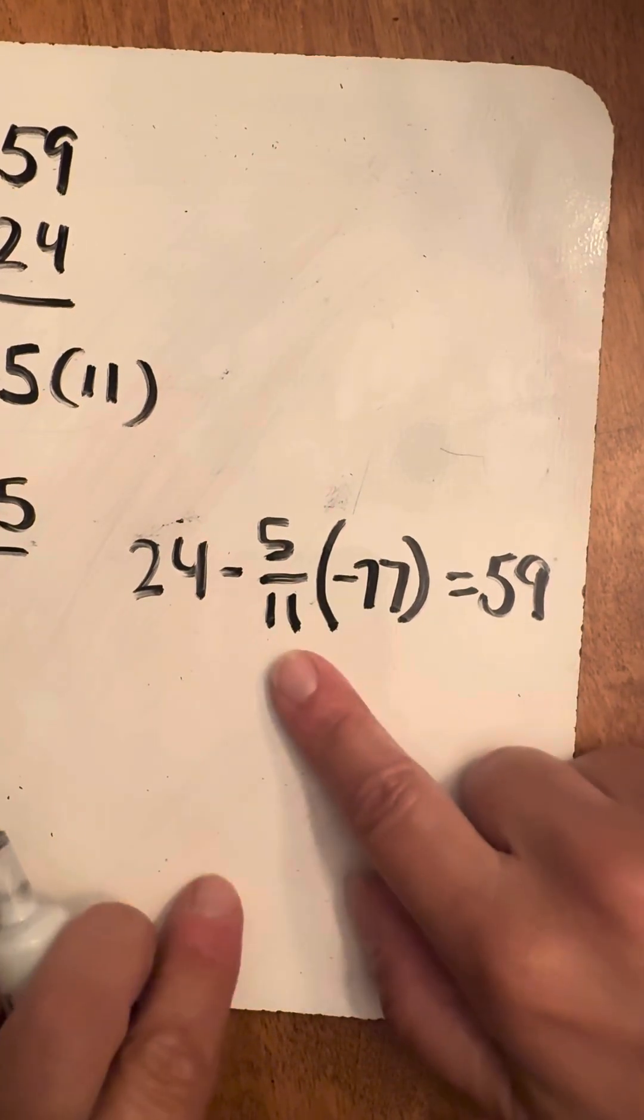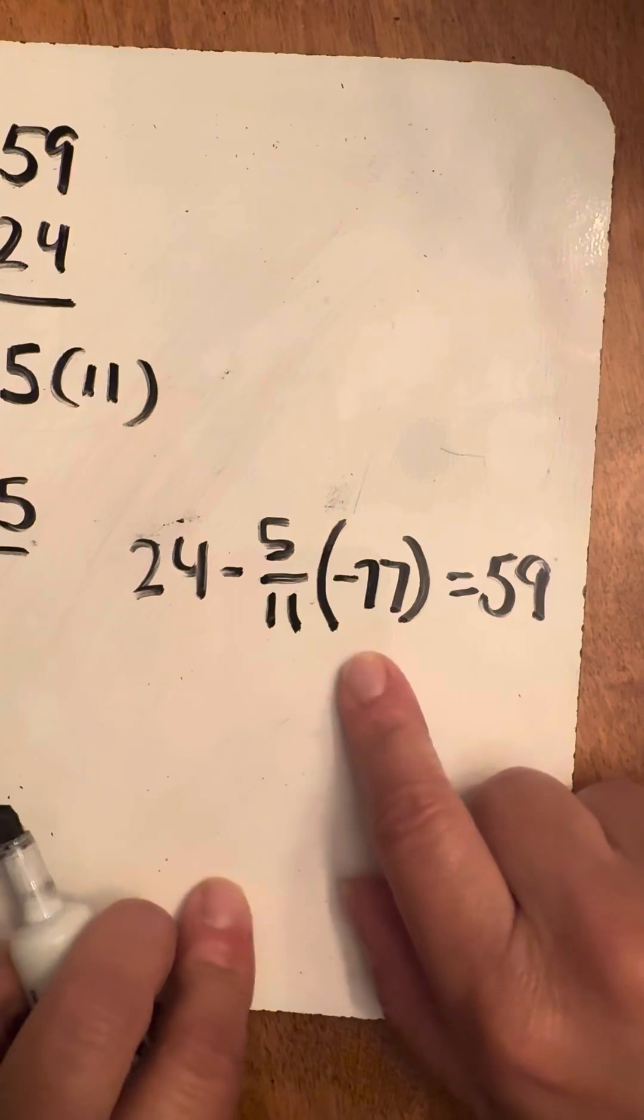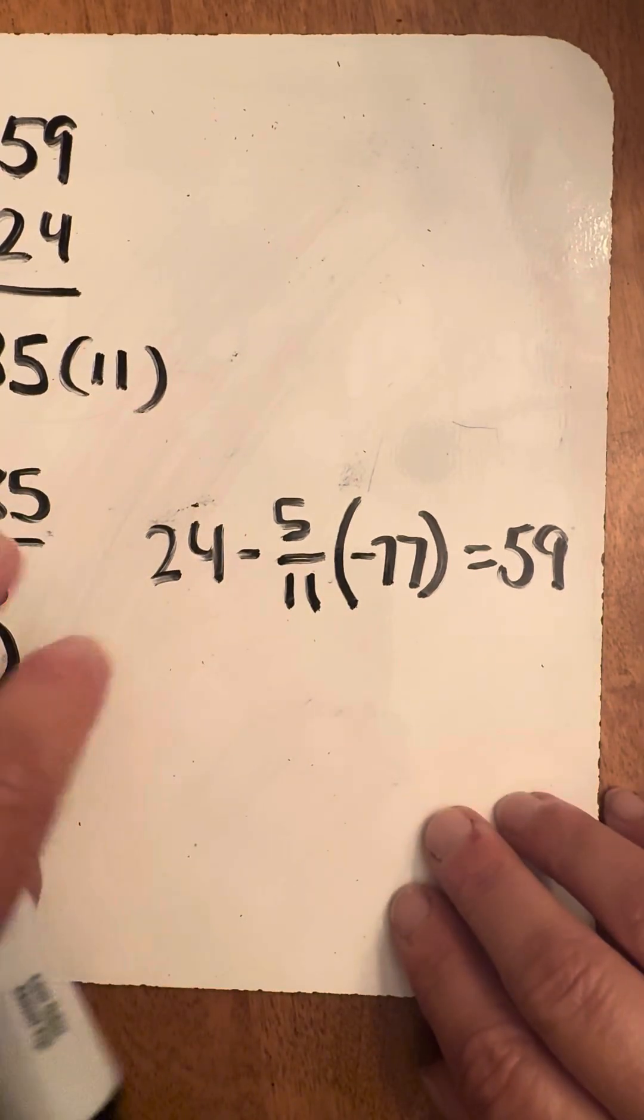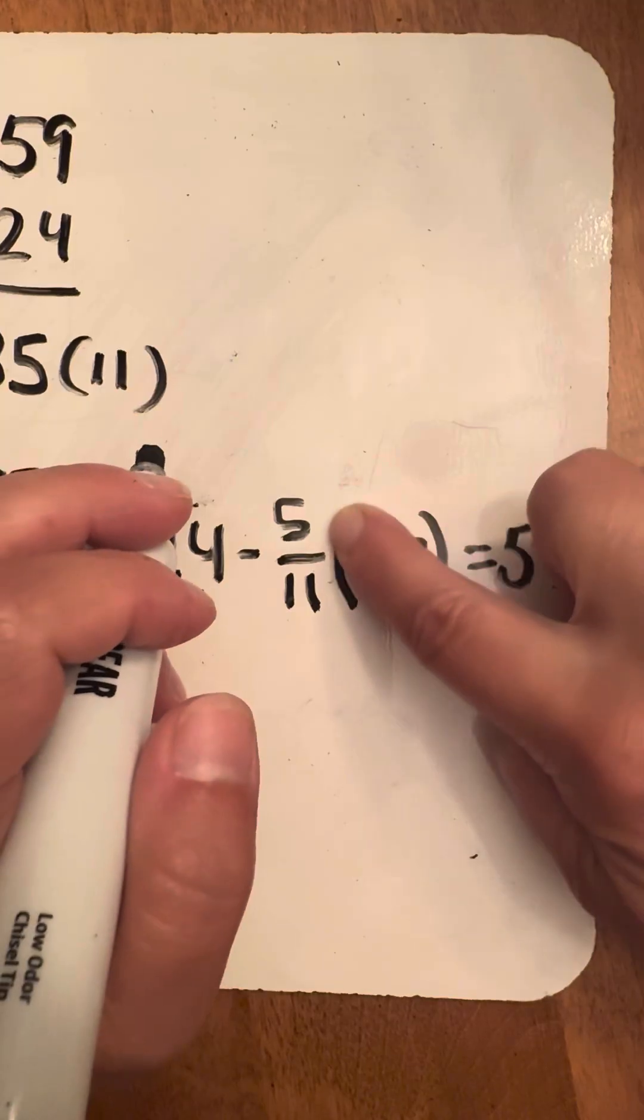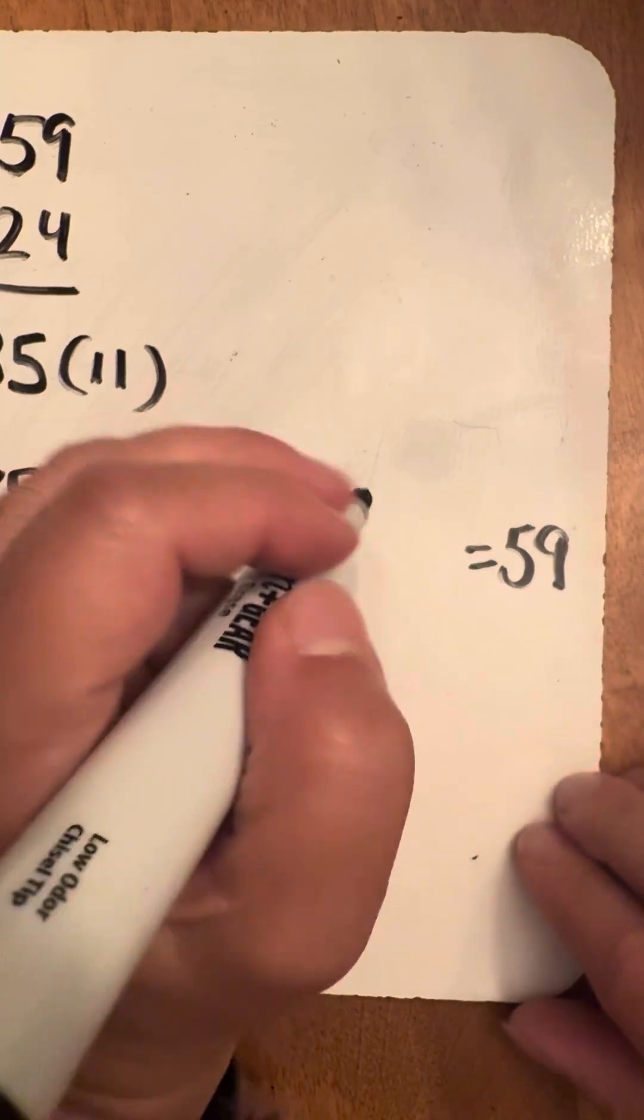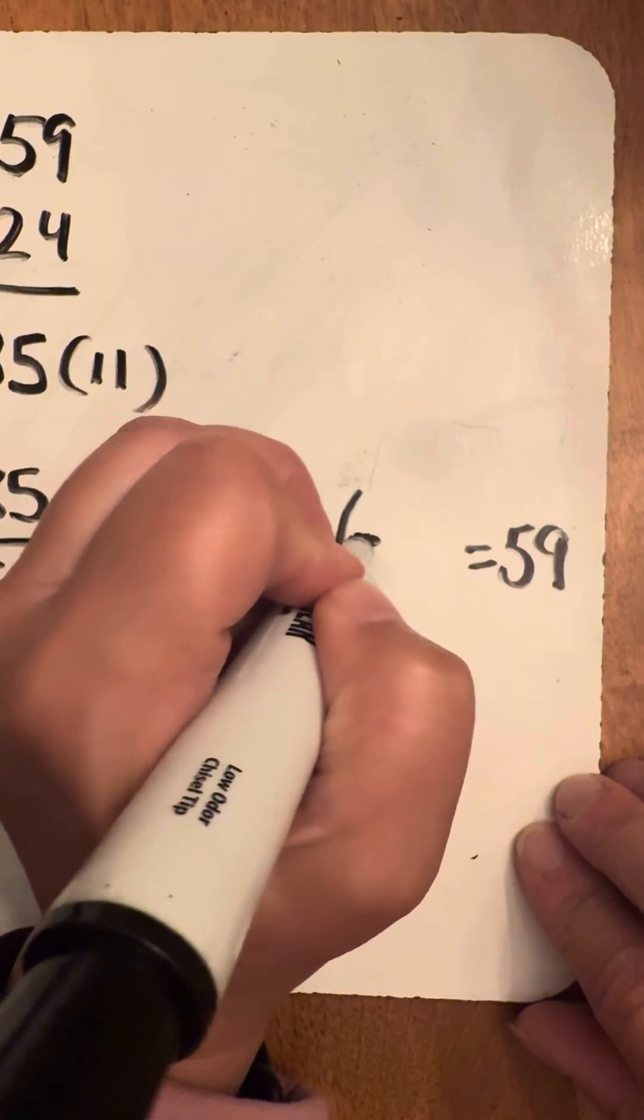And we are going to go ahead and simplify. Now, because I have a fraction here, this is multiplication. Multiplication has to be done before anything else because order of operations tells us we have to do multiplying first. What I'm going to do is I'm just going to rewrite this right here real quick as negative 77 over 1.